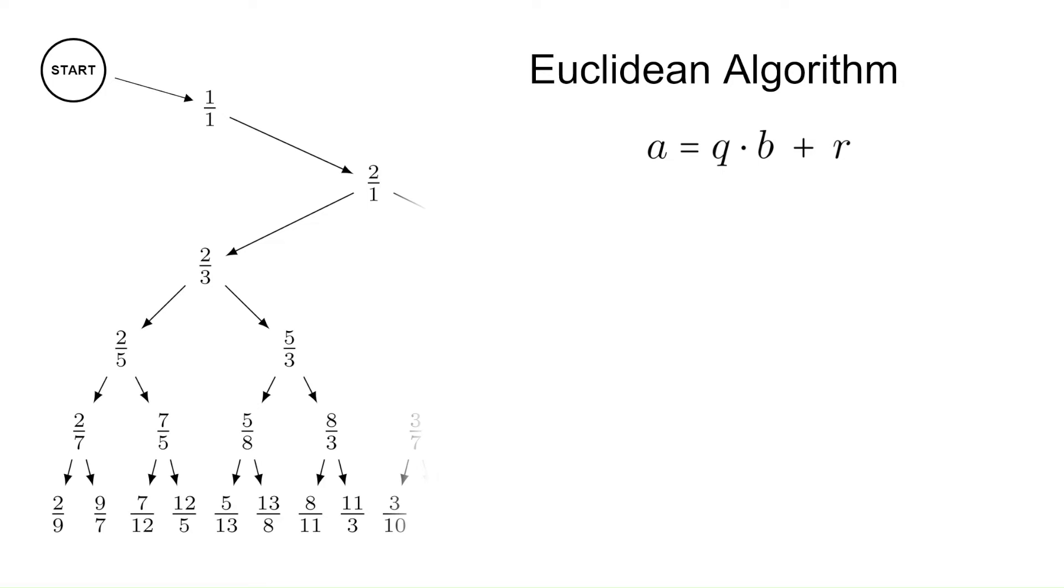To demonstrate the connection, let's focus again on 9 sevenths at the bottom of the tree. Look what happens when we perform the algorithm on 9 and 7. Right away, we notice that the multiples 1, 3, and 2 are the numbers of left and right movements in the tree. In addition, the values of B and R can be found as the numerators and denominators of the fractions at the turning points.